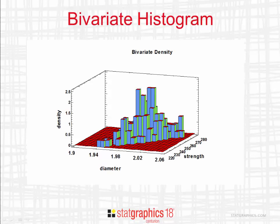This slide shows a bivariate histogram for that same data. You'll notice a fairly well-defined peak near the center of the observations. You'll also notice that the distribution looks reasonably symmetric.